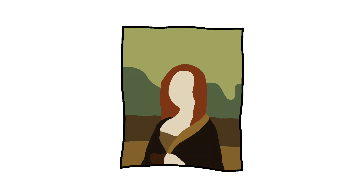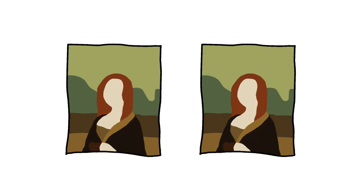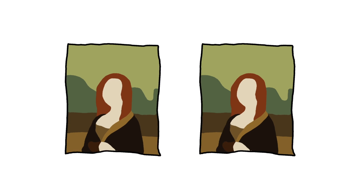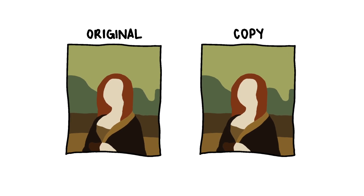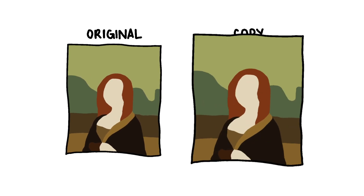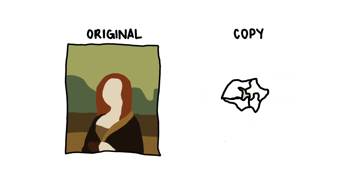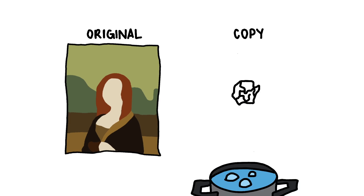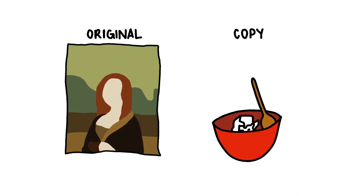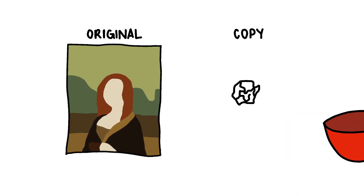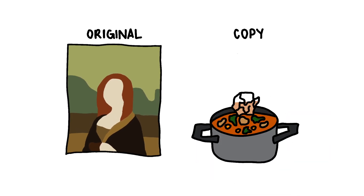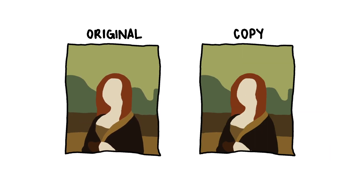Let's say that you have a picture — let's say that picture is the Mona Lisa. Let's say that you made a copy of the painting and you can do whatever you want with this copy. You can make it smaller, bigger, crush it, boil it, mash it, stick it in a stew — the whole shebang.